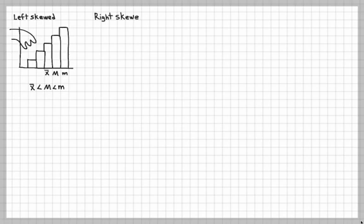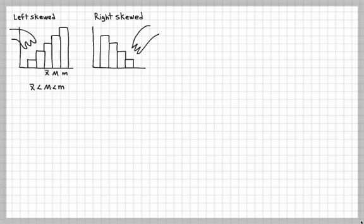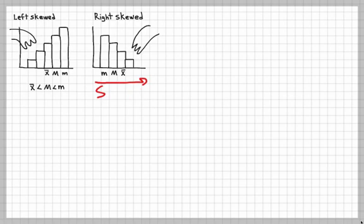For right skewed, the distribution is squished on the right side. The tallest bar is the mode, then the median — because it's in the middle between the two — and then X-bar, which is the sample mean. Since values go from small on the left to large on the right, we get: mode is less than median, is less than X-bar. If you keep that in mind before your exam or quiz, you'll be fine for any problem that comes up.